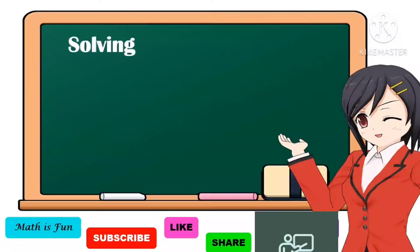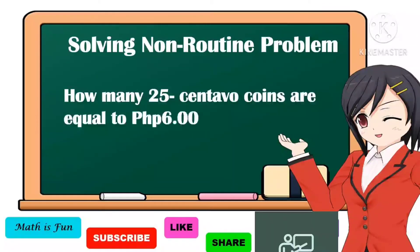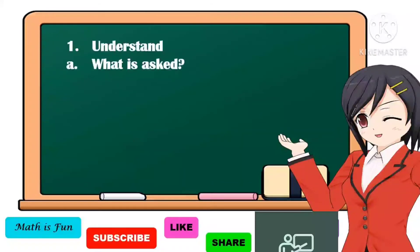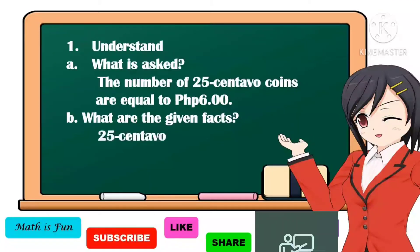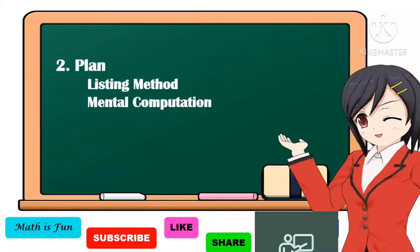Our next problem is solving a non-routine problem. How many 25-centavo coins are equal to 6 pesos? To answer our problem, let's understand what is asked: it is asking for the number of 25-centavo coins equal to 6 pesos. The given facts are: 25-centavo coins and 6 pesos.